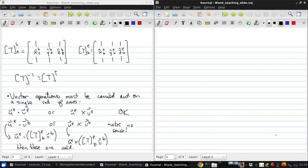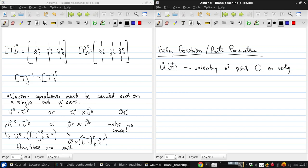Now let's introduce some basic body position and rate parameters. Start with u of t. This is the velocity of some point on the body of interest. We'll call it point O on the body, which is a reference point. This is often maybe the velocity of the center of mass. That's a linear velocity.